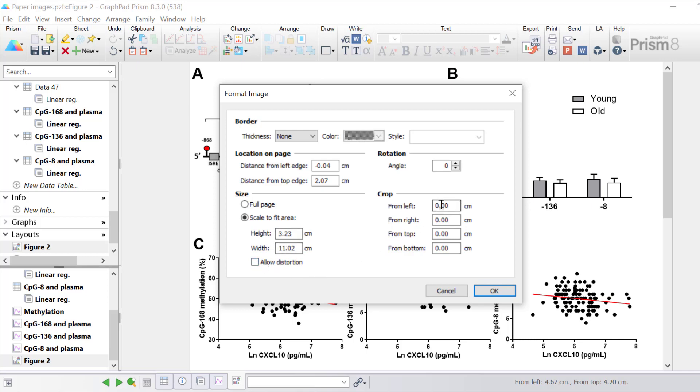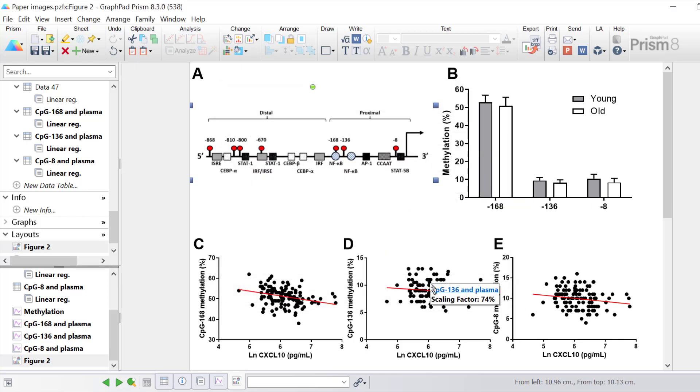If you wanted to crop part of the image you can specify in these text boxes here how much you want to crop from the left, right, top and bottom of the image. For now just click cancel to return back to the layout page.